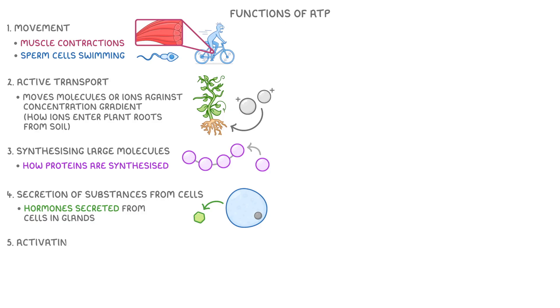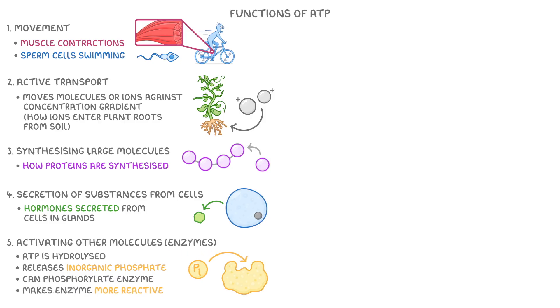Another role of ATP is activating other molecules such as enzymes. This happens when ATP is hydrolyzed, and it releases an inorganic phosphate that can phosphorylate an enzyme, meaning it adds the phosphate group to it, and this makes the enzyme more reactive.